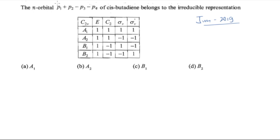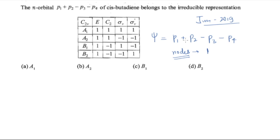The π orbital is given and I'm representing the molecular orbital as ψ. So ψ = p1 + p2 − p3 − p4. Now if you look at it — how many nodes are there? Find out the nodes. There is just one node, because the sign is changing only once. You can see that the sign gets changed from plus to minus only once. So the number of nodes is one — you can find it by looking at how many times the sign changes.